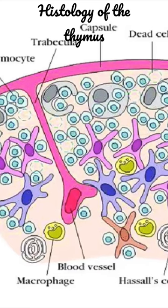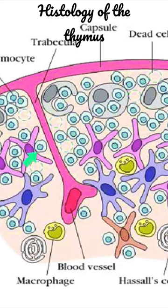Next, we'll look at the epithelial cells or epithelioreticular cells. Embryologically, these cells are derived from the endodermal lining of the third pharyngeal pouch. The cells later lose all contact with the pharyngeal wall, become flattened, and may branch. The cells then join to form a sheet that covers the internal surface of the capsule.